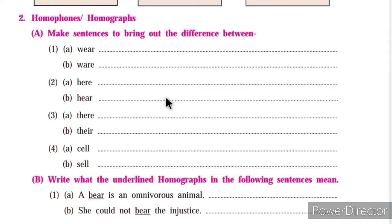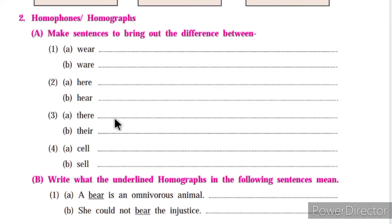For homophones, let's make sentences. 'Wear': We wear cotton clothes in summer. 'Where': He shares his wares at the weekly market. 'Here': She stood here for a long time. 'Hear': Speak softly or they will hear our conversation. 'There': Sheena was spotted there yesterday. 'Their': They visited their farmhouse. 'Sell': They sell cookies in the shop. 'Cell': The cell is solving the matter.